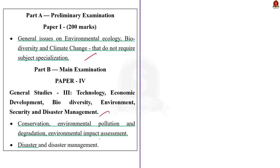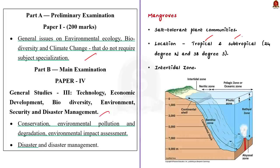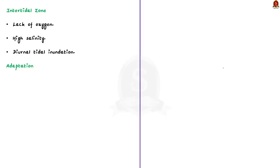Mangroves are salt-tolerant plant communities that mainly occur in tropical and subtropical regions of the world, between latitude 24 degrees north and 38 degrees south. Within these regions, they mainly occur in intertidal zones — the area where the ocean meets the land between high and low tides. These intertidal zones are marshy, with lack of oxygen, high salinity, and diurnal tidal inundation — conditions not ideal for normal plants, but mangroves thrive here through morphological and physiological evolutionary adaptations.